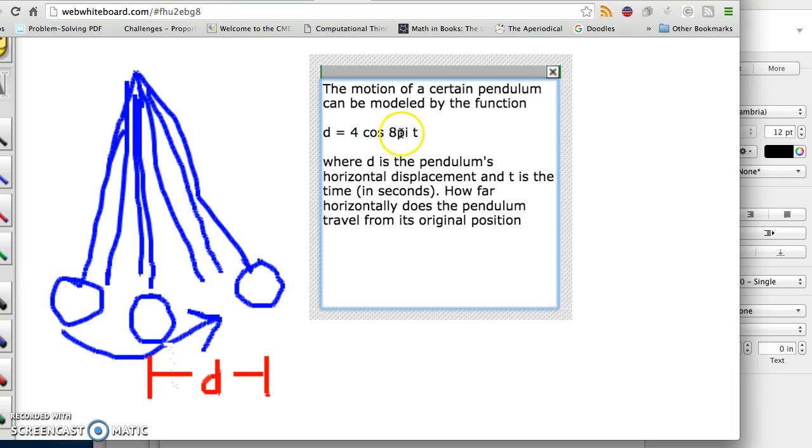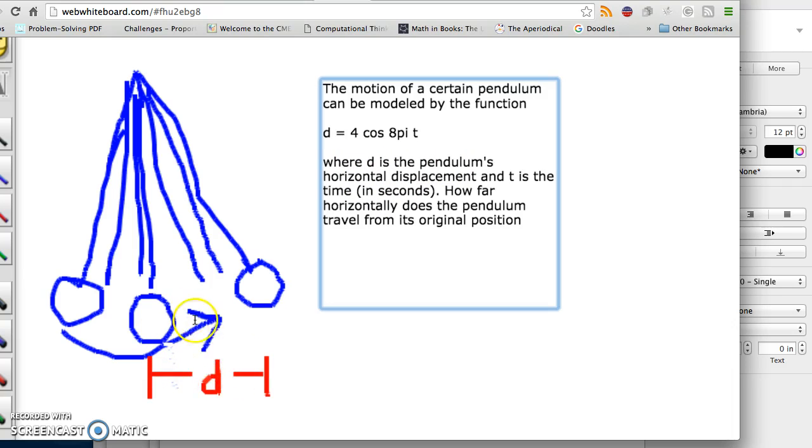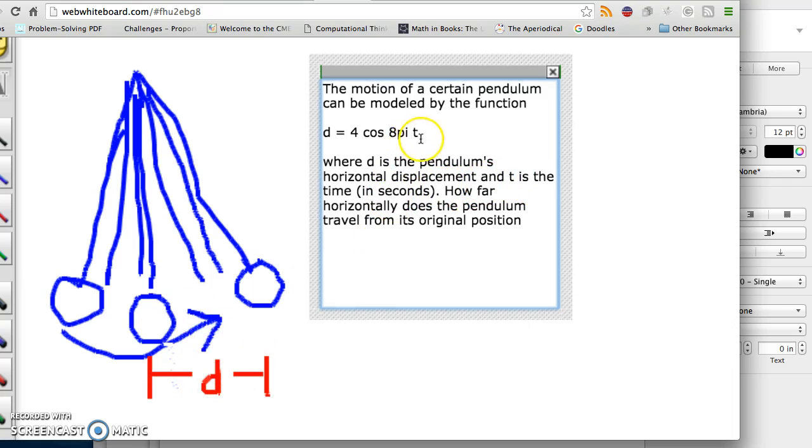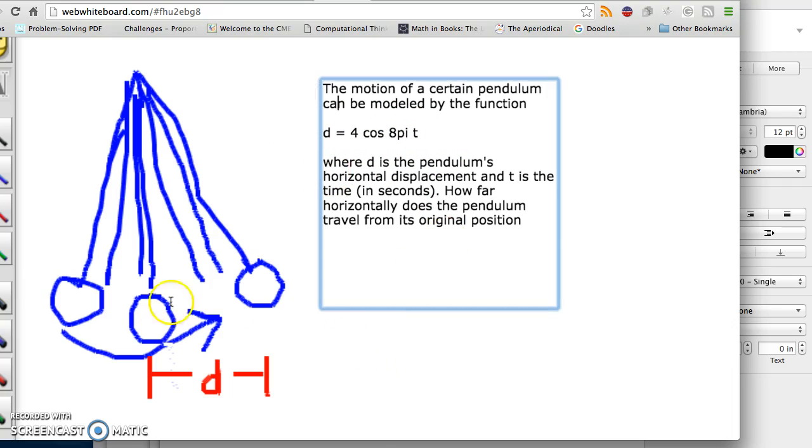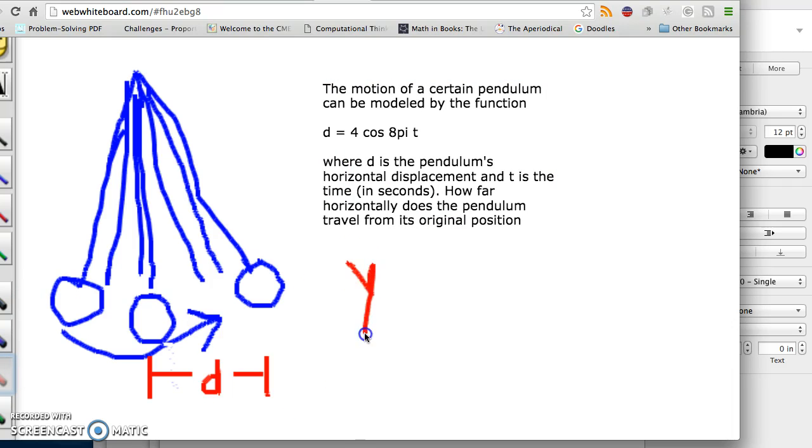You would normally use the pi symbol here. The only reason I didn't is because I'm typing on a software that doesn't have it. Where D is the pendulum's horizontal displacement. And you can see that here in my beautiful drawing I've done. And T is the time in seconds. So, basically, we've got to use these as X and Y values, right? And based on what we just learned about graphing these things, we use this formula to graph. So, it seems like D should be Y and T should be X. And that's normal because time is usually graphed on the X axis. So, T is like X. So, A is 4, right? And B is 8 pi.